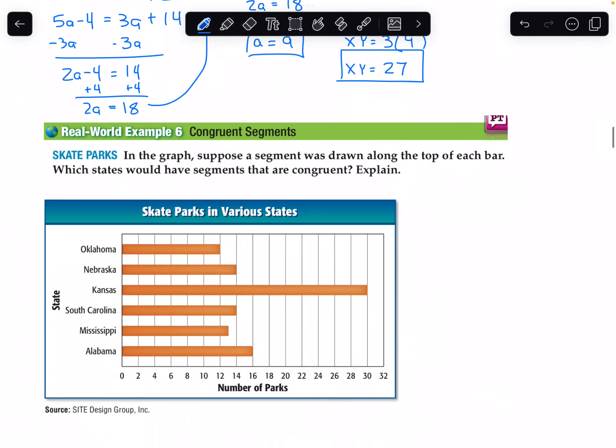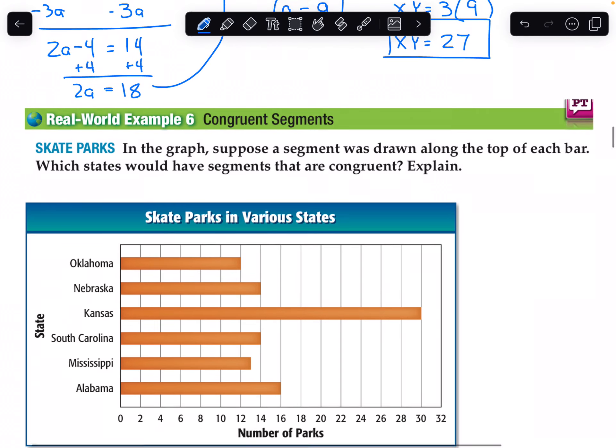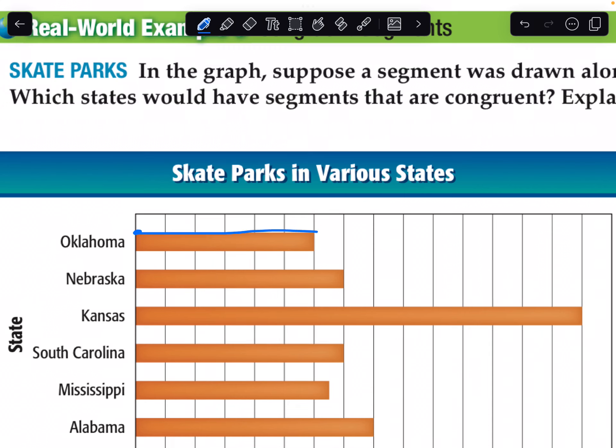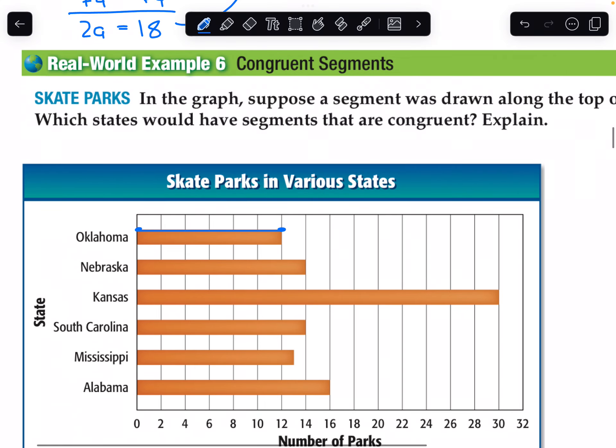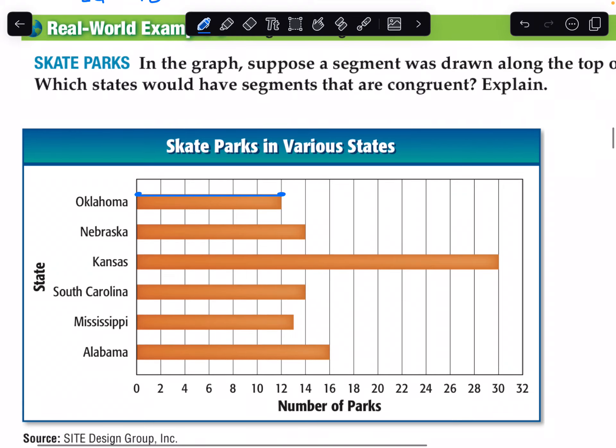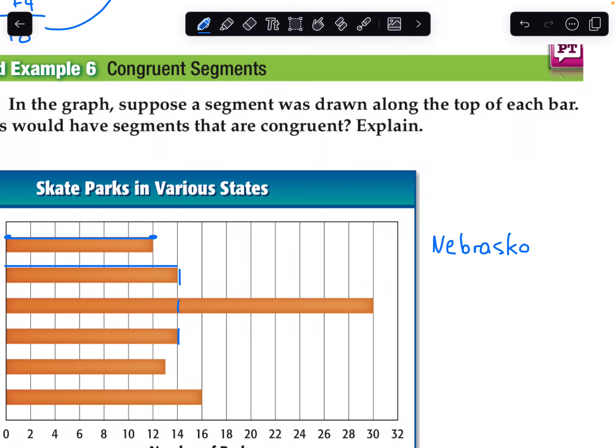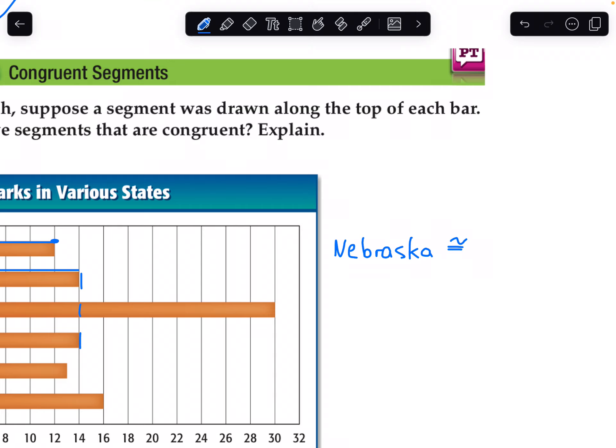Finally, example 6. In the graph, suppose a segment was drawn along the top of each bar. Which states would have segments that are congruent? Explain. Oklahoma's segment would be 12, and I don't see any others that are 12. Nebraska is this long, and that's the same as South Carolina. So Nebraska is congruent to South Carolina.